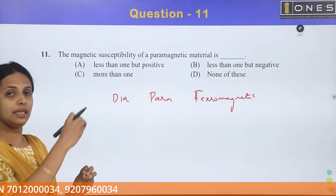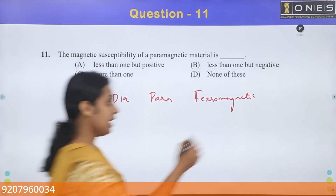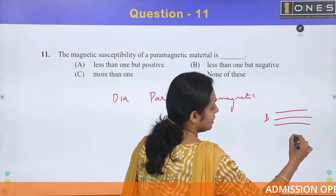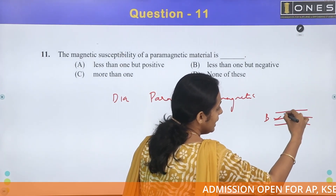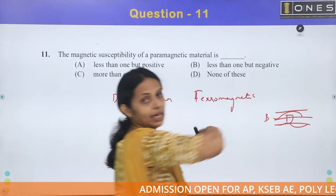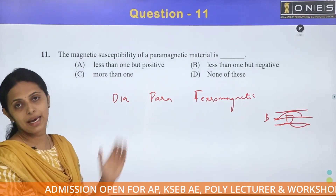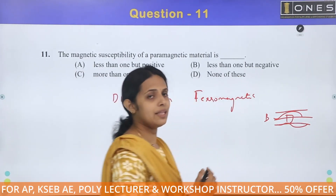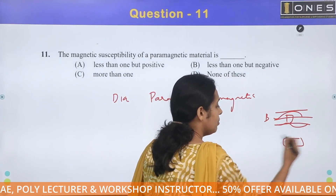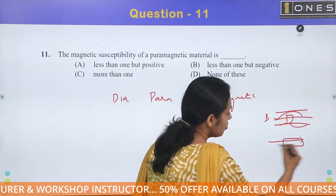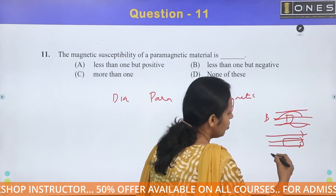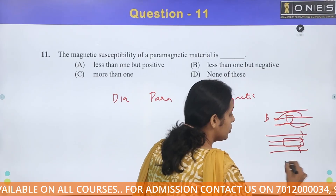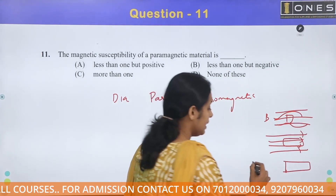We put a material in a magnetic field. If we put a diamagnetic material in the field, it repels flux lines. For paramagnetic material, when we put it in the magnetic field, we observe that it concentrates a few flux lines.